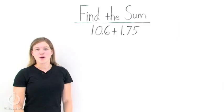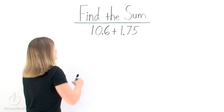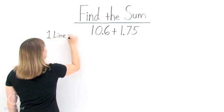Let's find the sum of 10.6 and 1.75. When performing an addition on two numbers that contain decimal points, we want to first line everything up as we normally would for an addition.